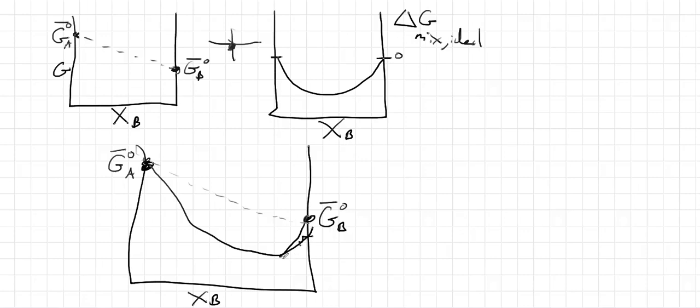So we can see right here, if we minimize our Gibbs function, we're going to form an equilibrium. And notice that equilibrium is not a pure product. And that's a consequence of the entropy of mixing.